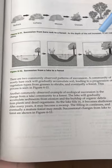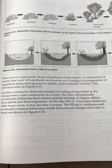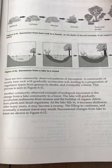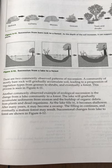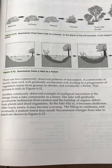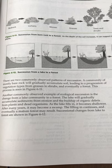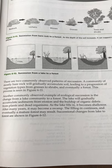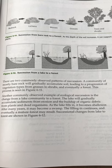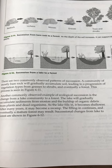There are two commonly observed patterns of succession. A community on mostly bare rock will gradually accumulate soil, leading to a progression of vegetation types from grasses to shrubs and eventually a forest — this process is seen in Figure 6-11. Another commonly observed example is the change from a lake community to a forest: the lake gradually accumulates sediments from erosion and the buildup of organic debris. As the lake fills in, it becomes shallower. After many years, it becomes a swamp. The filling in continues and eventually mature forests may result. Successional change from a lake to a forest is shown in Figure 6-12.